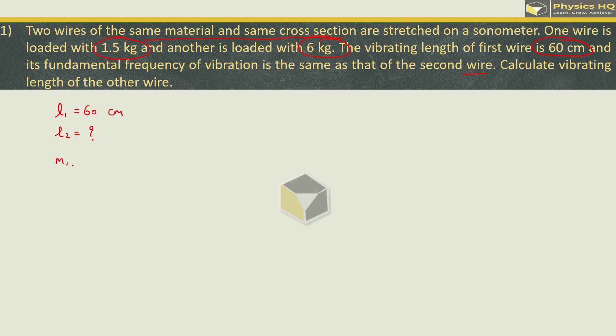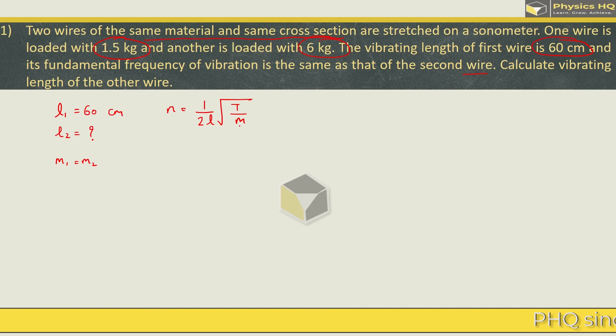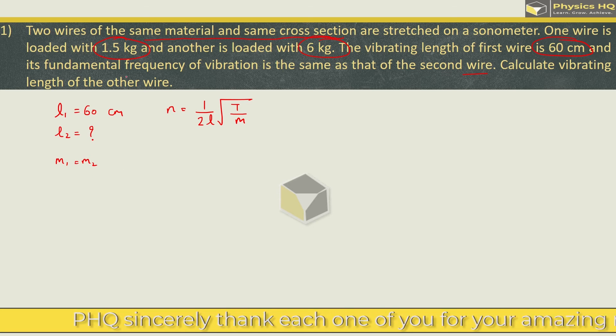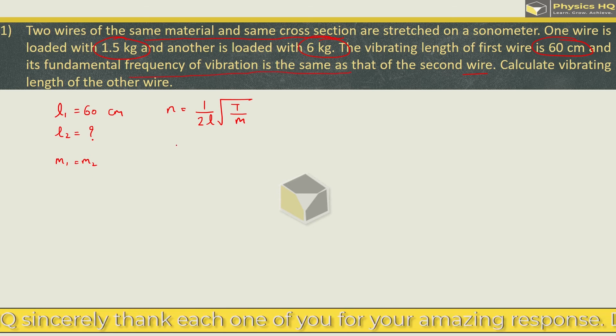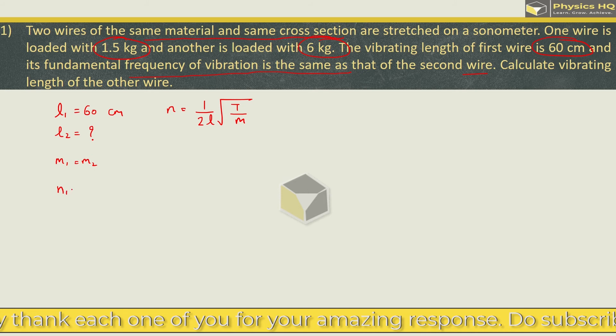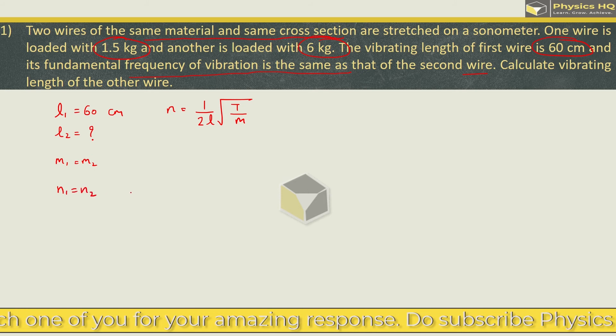Now both the wires are of same material and same cross section, so M1 will be equal to M2 in this case. What is small M1 M2? These are the mass per unit length. Let me write down the formula that we are going to use. N is equal to 1 upon 2L root of T by M, where T is the tension and M is mass per unit length of the wire used.